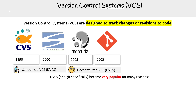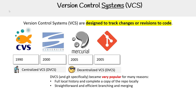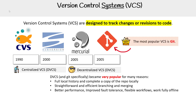These decentralized ones became very popular for very specific reasons. They had full local history and complete control of the repo locally. They were straightforward and efficient for branching and merging, which was a really big deal. They also offered better performance, improved fault tolerance, flexible workflows, and the ability to work fully offline.